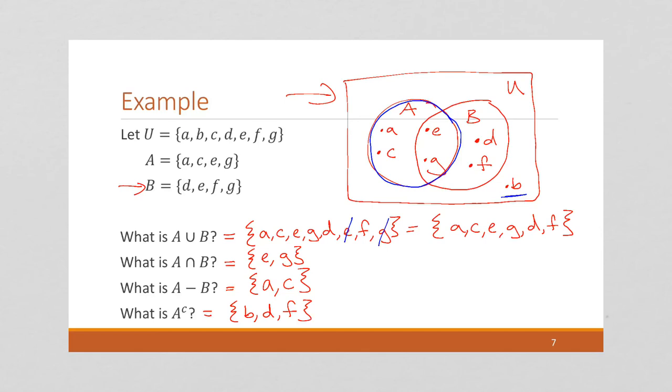Again, we can come over to our diagram and say, well, what's not in A? These are in A, so we have B, D, and F.